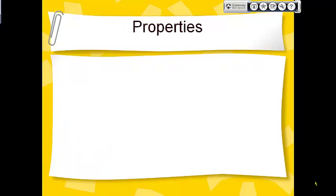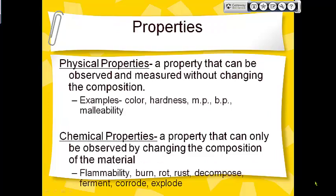What are the properties of matter? There are two types of properties. Physical properties are properties that you can see or measure without actually changing what the matter is made out of — its composition. Examples of physical properties are color, hardness, melting point, boiling point, malleability or bendableness, and breakableness. All those things are considered to be physical properties.